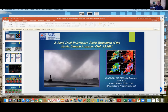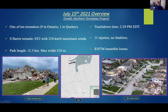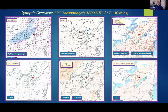Thank you, Julian. Welcome everyone. This talk is about the Berry tornado from last summer. Daniel Leota, my co-presenter, and I will be primarily discussing the S-band radar analysis of this storm. It was certainly an impactful storm — one of 10 tornadoes. The Berry tornado was rated EF2 by the Northern Tornado Project with significant damage, thankfully no fatalities, although there were 11 injuries.